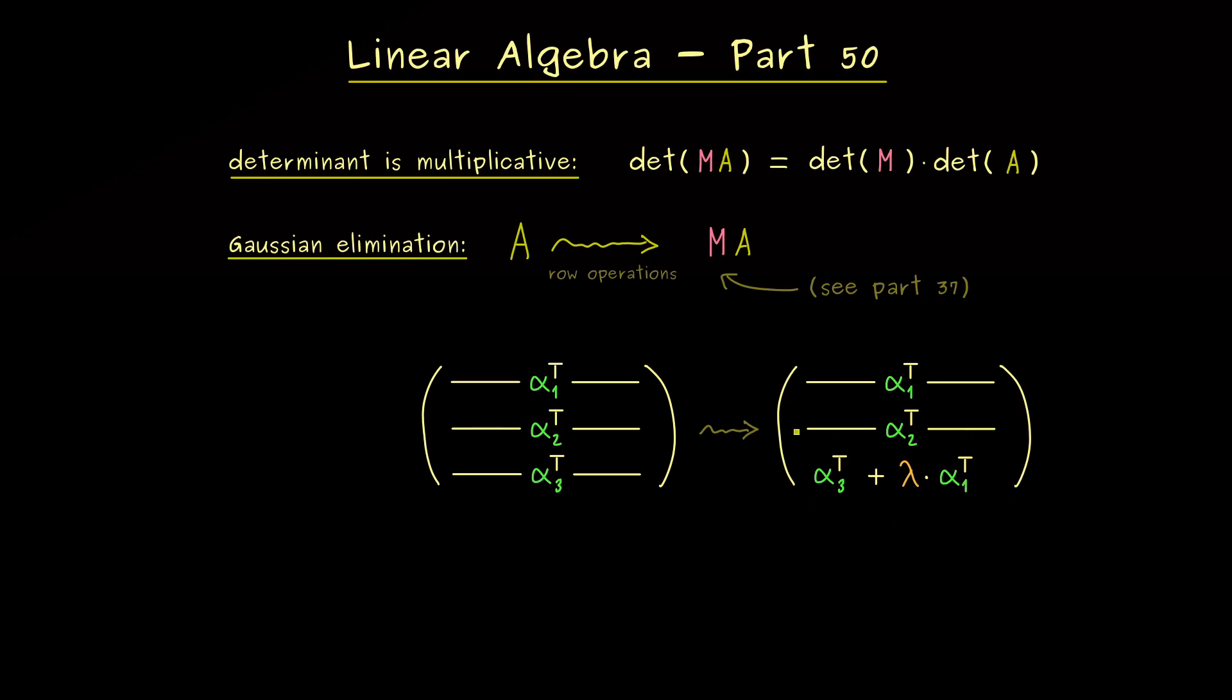And now we have learned, that we can rewrite this as a matrix product. So we just have to multiply the correct matrix from the left here. And now please recall, it's a 3 times 3 matrix, which looks like this. And if you look back at part 37, you might see, there we have called it Z.